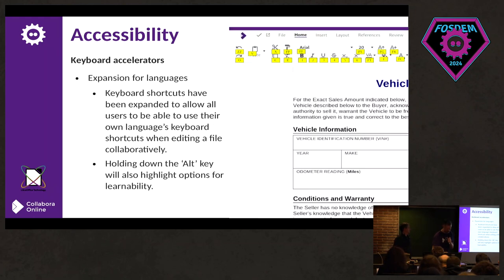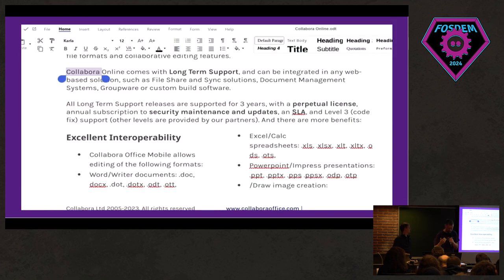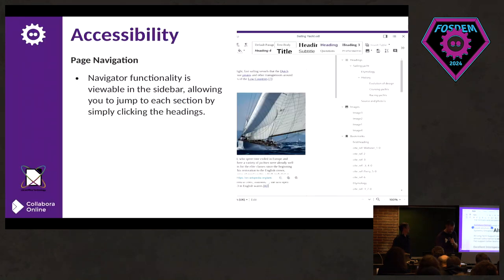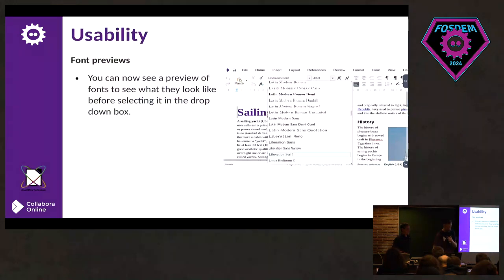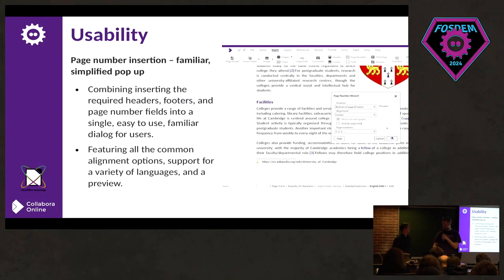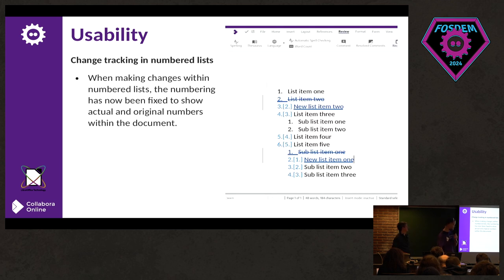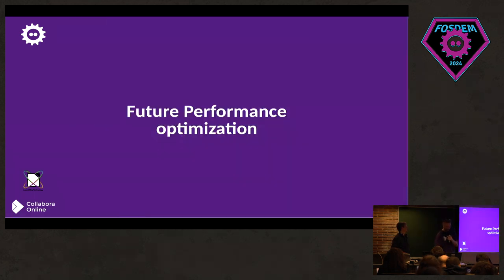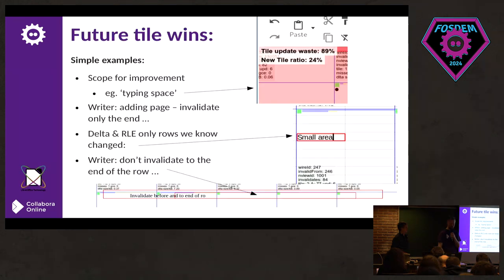Accessibility, dark modes, keyboard accelerators — the good stuff for people — screen reading and nice things, videos of that. Better page navigators at the side so you can see where you're going. Lots of little bits of usability polish: nice font previews, making it easier to insert page numbers so people can see what's going on, better change tracking and showing changes, AI deployment stuff.